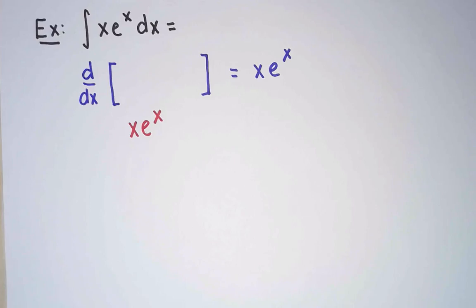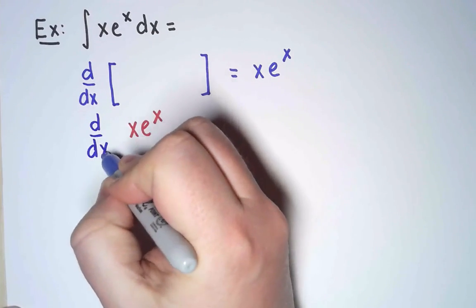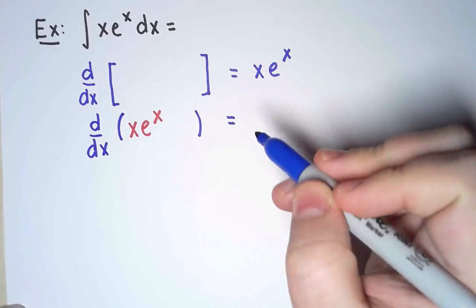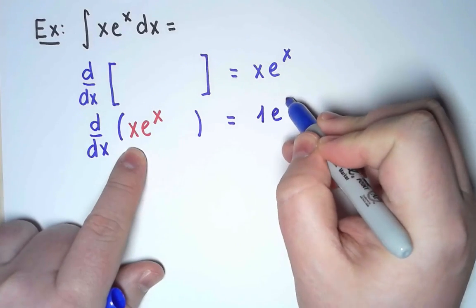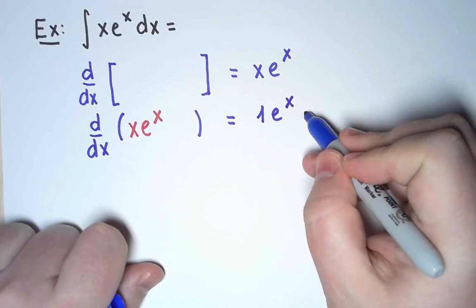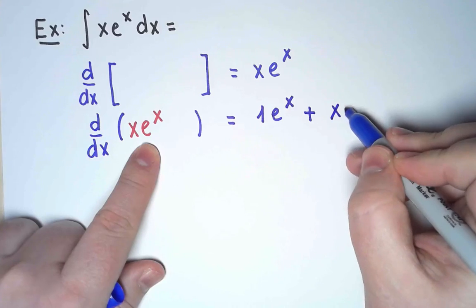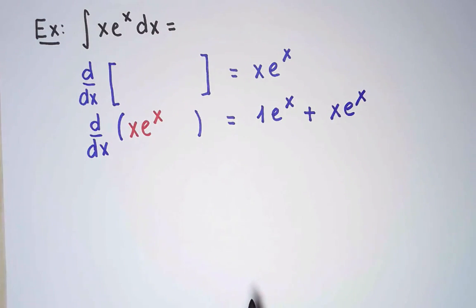Well, the derivative of x e to the x is, let's use product rule, 1 times e to the x when I differentiate the first term, plus x times e to the x when I differentiate the second term.